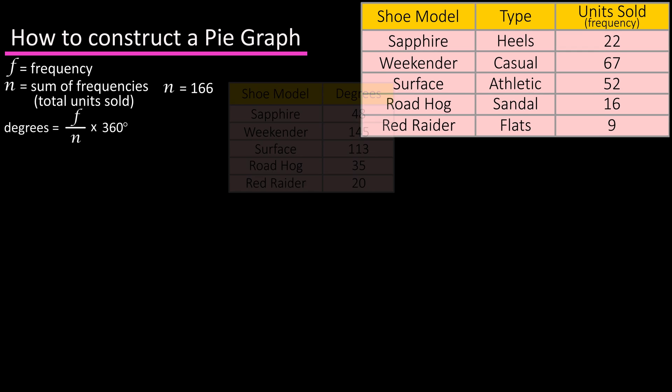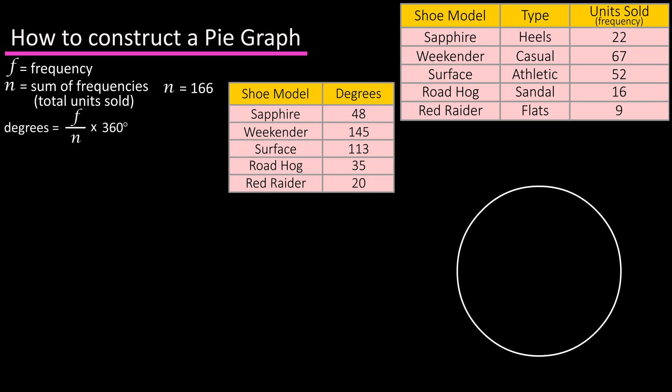Now that we have the degrees for each of the pie slices, we can enter them into the circle. For the sapphire shoe, we have 48 degrees. We know that a right angle is 90 degrees, so we can sketch that into the circle from the center of the circle. And half of 90 degrees is 45 degrees, so 48 is slightly larger than 45. We can draw in our line about here.